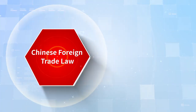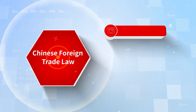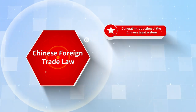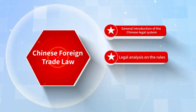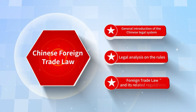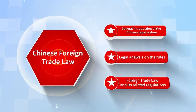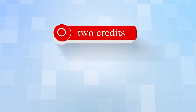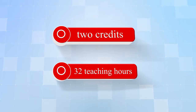The syllabus consists of eight chapters, which include a general introduction to the Chinese legal system and a legal analysis of the rules and principles of Chinese foreign trade law and its related regulations. This course has two credits with 32 teaching hours.